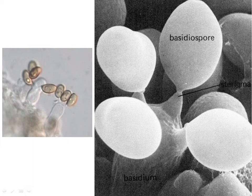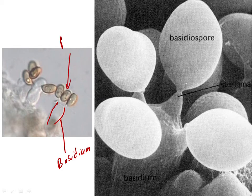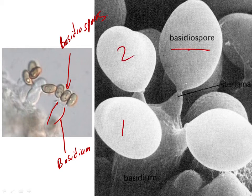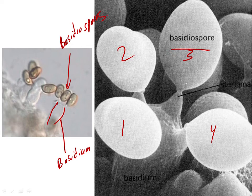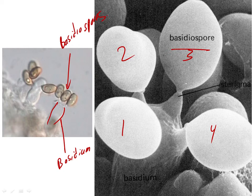Here's our basidium — two views. Here's a light micrograph showing the basidium, the pedestal, and here are the basidiospores. Look at how many there are: not eight, but four — and that tells us they come from meiosis. Meiosis produces four cells. There is no subsequent mitotic cell division after meiosis. So in the basidium, meiosis takes place and four haploid spores are produced.